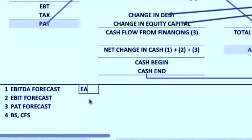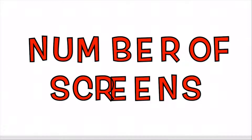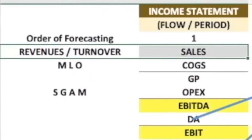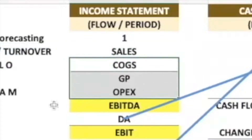EBITDA stands for earnings before interest, tax, depreciation, and amortization. Let's take the example of PVR — PVR's revenue will increase by increasing the number of screens. If I have 400 screens today and add 100 more, my revenue will increase. A major revenue driver in PVR's case is the number of screens; in DMART's case it is the number of stores.